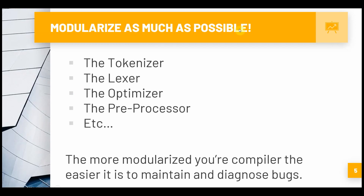As I said before, you want to modularize as much as possible. I made the mistake of not doing this and it was hell to pay when it came to adding new features and fixing bugs. You want to make sure you have a tokenizer, a lexer - which is another word for a parser - a code optimizer (please do not attach this to your compiler, make it a separate thing), and your preprocessor. Just anything you can break away from the main compiler. The more modularized your compiler is, the easier it is to maintain and diagnose bugs.